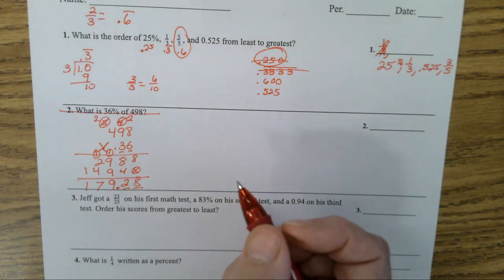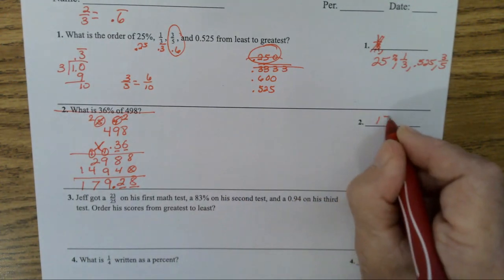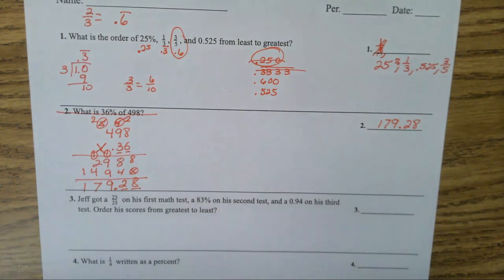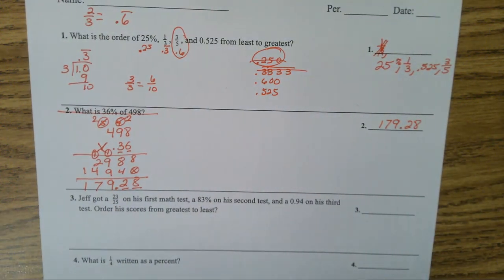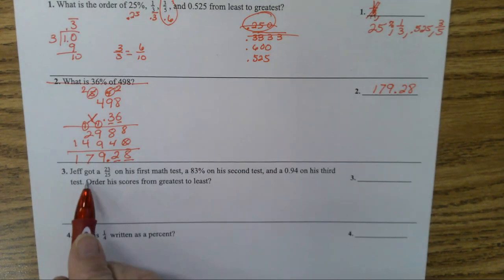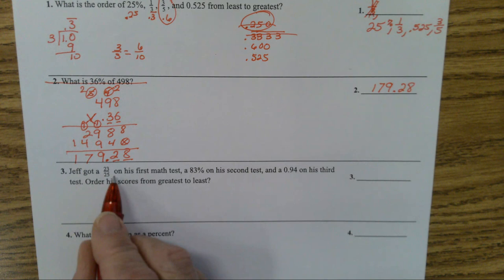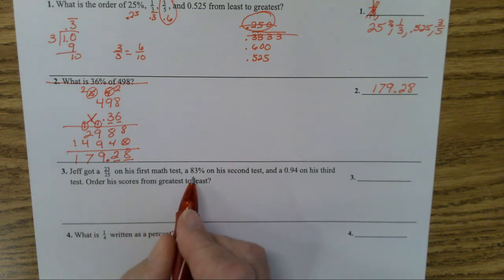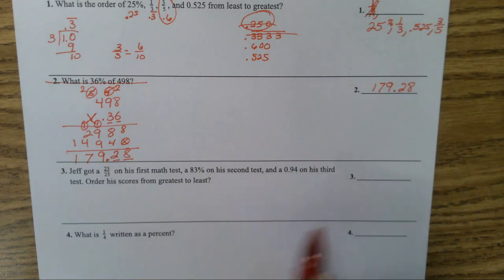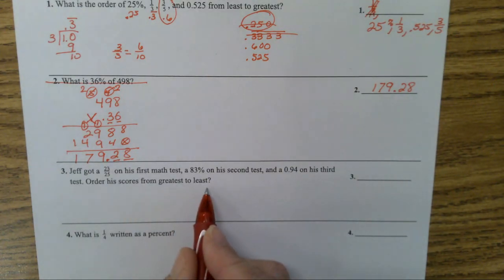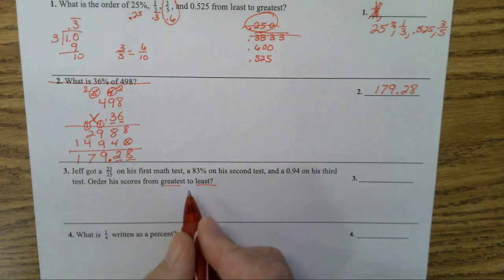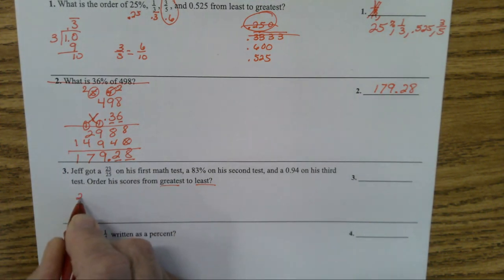Question number three: Jeff got 23 out of 25 on his first math test, 83% on his second, and 0.94 on his third. Order his test scores from greatest to least. So we want the largest one first. I can change 23/25 to a decimal because 25 is a factor of 100.